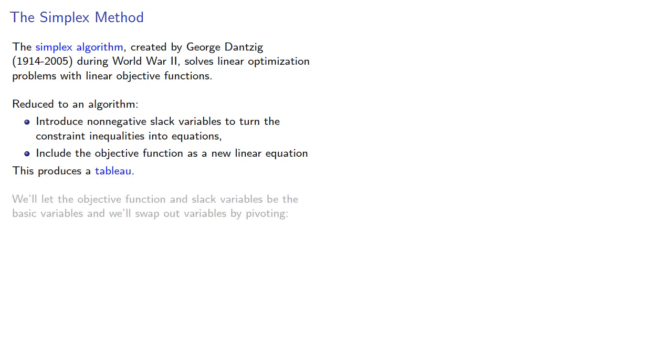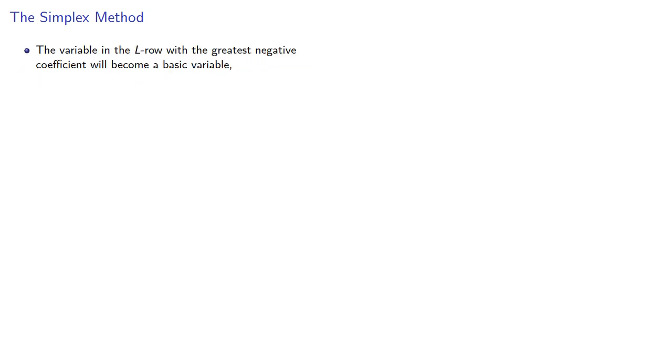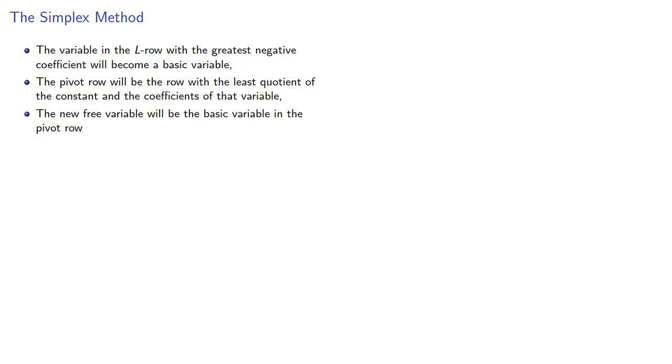We'll let the objective function and slack variables be the basic variables and we'll swap out variables by pivoting. The variable in the L row with the greatest negative coefficient will become a basic variable, the pivot row will be the row with the least quotient of the constant and the coefficients of that variable, and the new free variable will be the basic variable in the pivot row. The new basic variable is usually called the entering variable, while the new free variable is called the exiting variable.